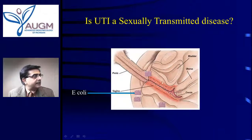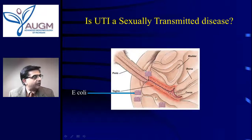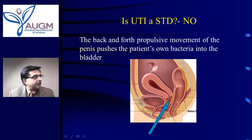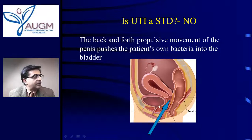Let me explain. During intercourse, if E. coli are hanging around the rectum and near the perineum and urethral opening, the piston-like movement of the penis in the vagina pushes the patient's own bacteria from outside the urethra into the bladder. So when they were outside it was all right — the moment they get into the bladder, that causes an infection. So this is not a sexually transmitted disease; it is the patient's own bacteria being pushed in.